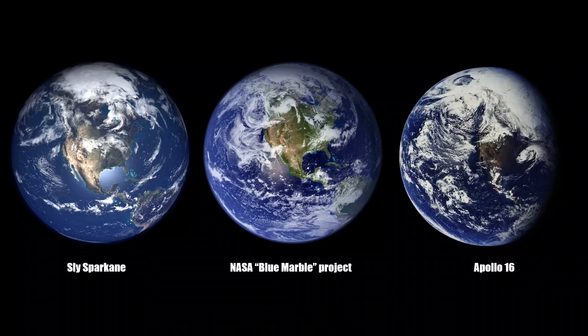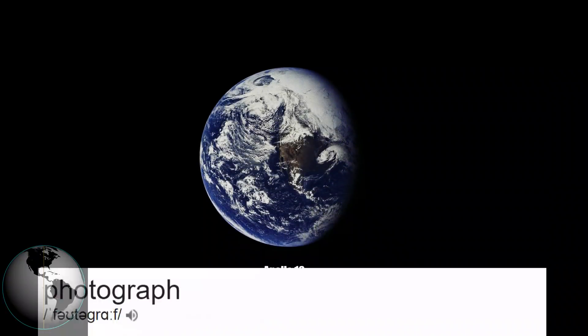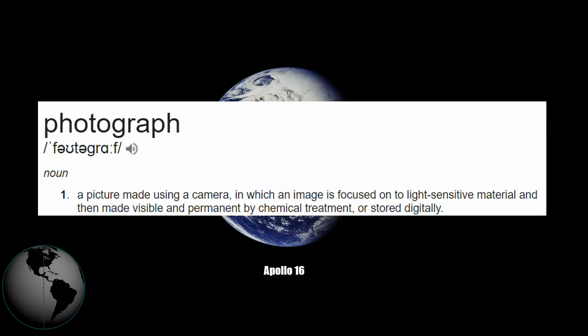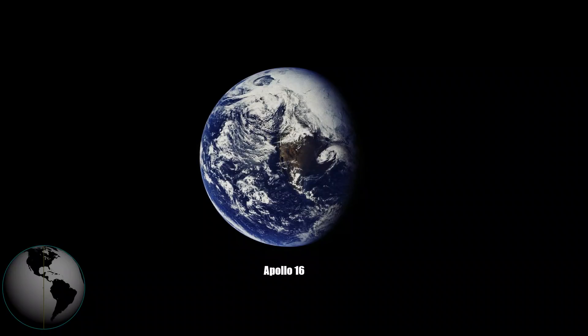And since flat earthers seem to lack the ability to read, I'm going to go ahead and walk you through this. Pay no attention to the little graphic in the corner for right now — we'll talk about that later. First we'll concentrate on the photographs, because it's the simplest thing to cover. Here's the definition of a photograph: a picture made using a camera in which an image is focused on the light sensitive material and then made visible and permanent by chemical treatment or stored digitally — meaning pointing a camera at something and taking a photograph of it. Pretty simple.